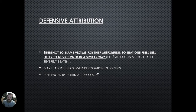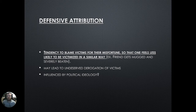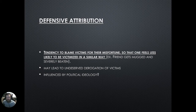Another attribution we can make helps deal with random events such as crime or misfortune. This is known as a defensive attribution — a tendency to blame a victim for their misfortune, so that we feel less likely to be victimized in the same way. For example, if a friend is mugged and severely beaten, we may defensively suggest they somehow deserved it or did something that led to it. This often leads to undeserved derogation of victims and victim blaming, done to protect ourselves from the randomness of events like crime.